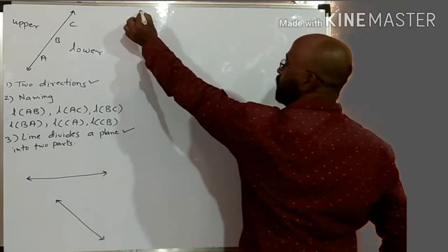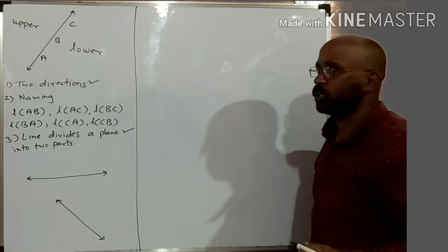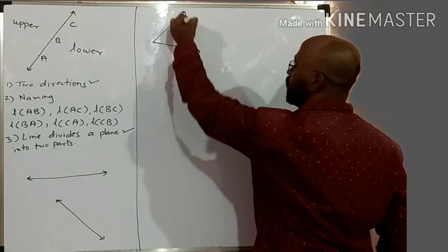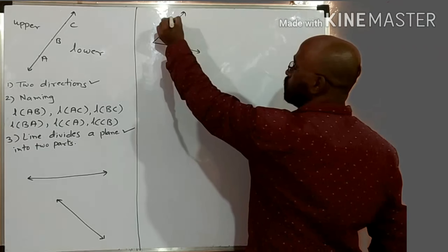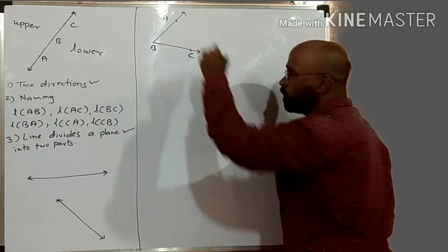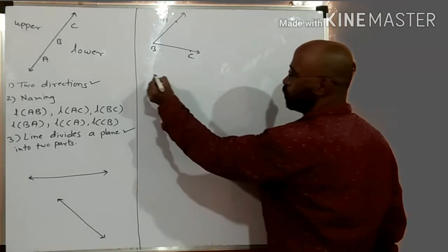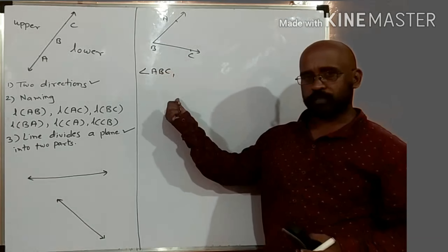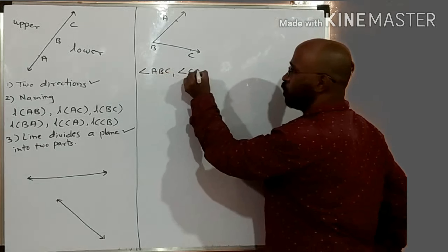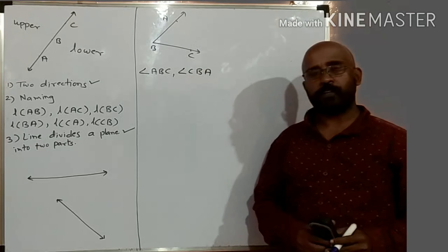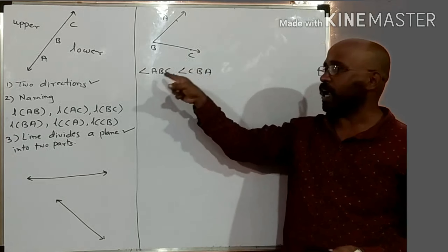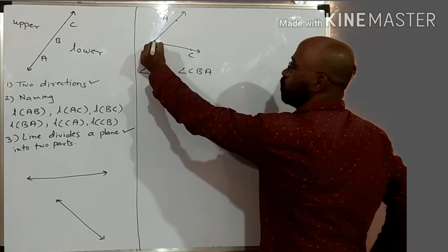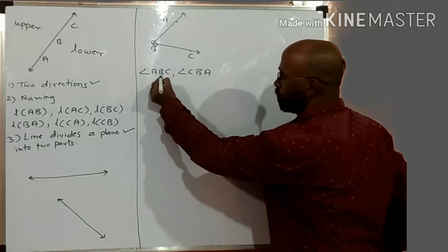Now let us talk about angles. How to name an angle is the most important thing we have to use here. Suppose I draw one angle. We just have to deal with naming of the angle. This is one angle: A, B, C. So how will you write the name of this angle? You will write the symbol of angle and write angle ABC. But is it the only name of this angle? Can we write it as angle CBA also? This originating point of the angle should come in between.